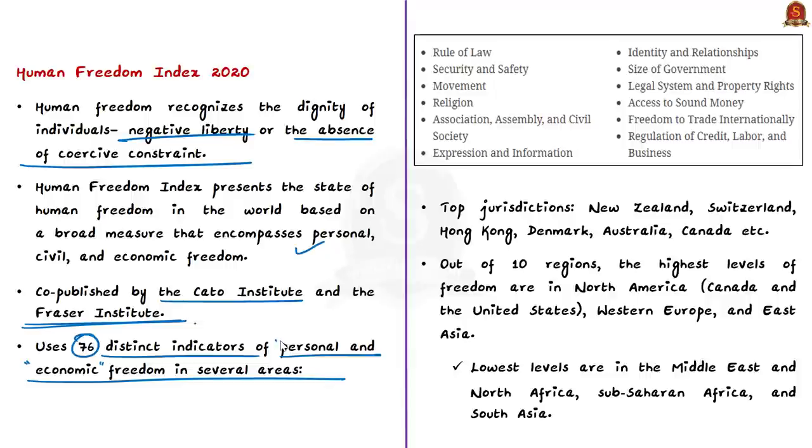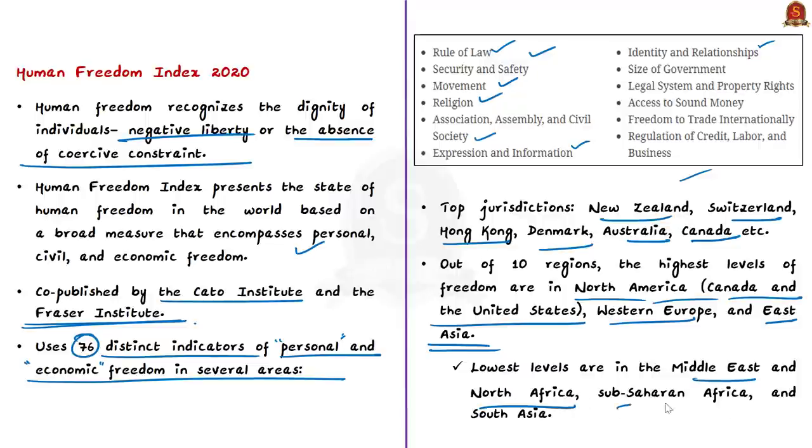This includes rule of law, security and safety, movement, religion, association, assembly, and also civil society, expression and information, identity, and relationships. It also covers the size of government, legal system, and property rights, then access to sound money, freedom to trade internationally, and regulation of credit, labor, and business. Now in the 2020 index, the jurisdictions that took the top places are New Zealand, Switzerland, Hong Kong, Denmark, Australia, and Canada. Out of 10 regions, the highest level of freedom are in North America which includes Canada and the United States, then Western Europe, and East Asia. The lowest levels of freedom are in Middle East and North Africa, and also Sub-Saharan Africa and South Asia.